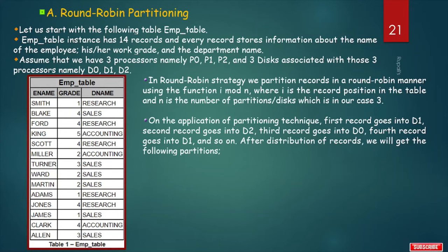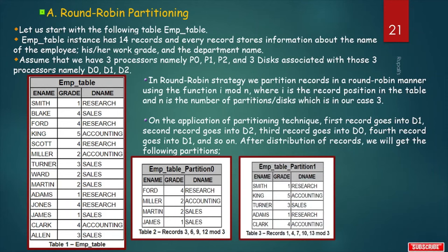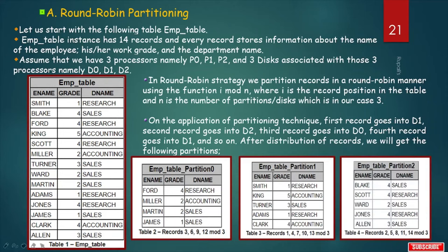After distribution: records 3, 6, 9, and 12 go to partition 0 (since 3 mod 3 = 0, 6 mod 3 = 0, etc.). Records 1, 4, 7, 10, and 13 go to partition 1 (since 1 mod 3 = 1, 4 mod 3 = 1, etc.). Records 2, 5, 8, 11, and 14 go to partition 2.